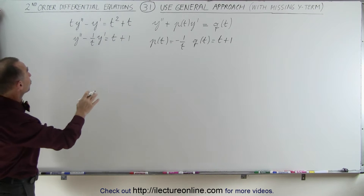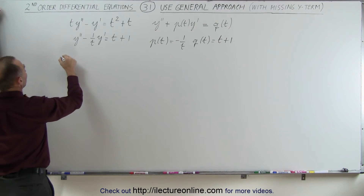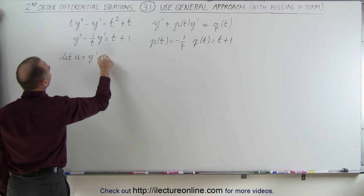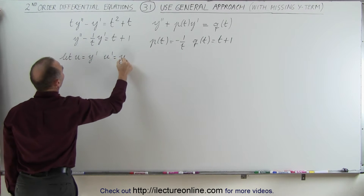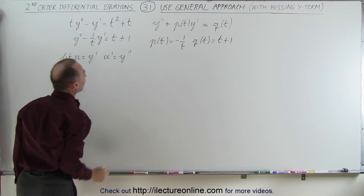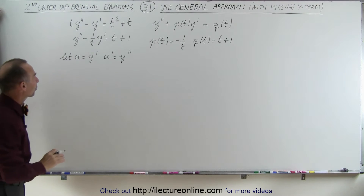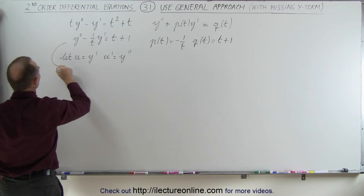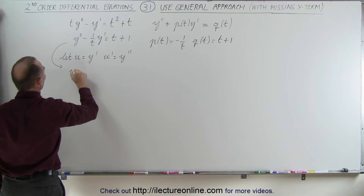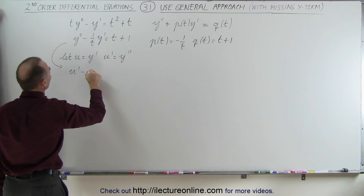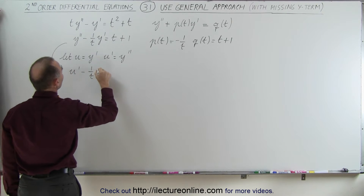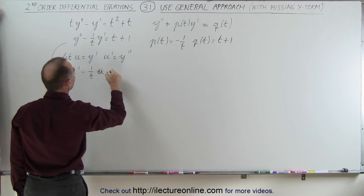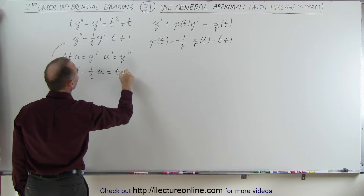First we make the substitution: let U equal Y prime and U prime equal Y double prime, so we turn it into a first-order equation. This then looks as U prime minus 1 over T times U equals T plus 1.